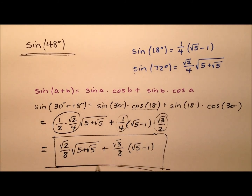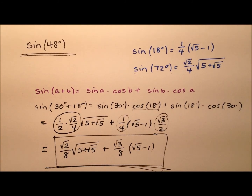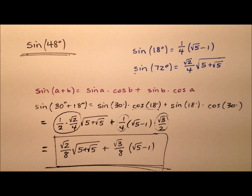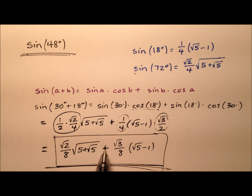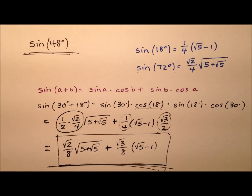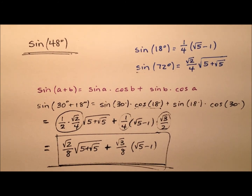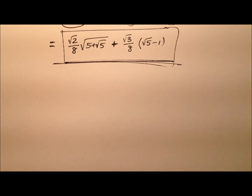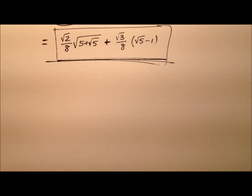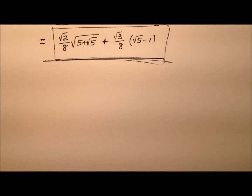So this expression here is the exact value for the sine of 48 degrees — no decimals, no rounding. We just have this irrational number added to another irrational number. Let's go ahead and grab a calculator to ensure that this value works.